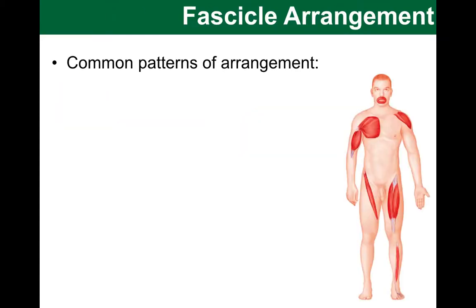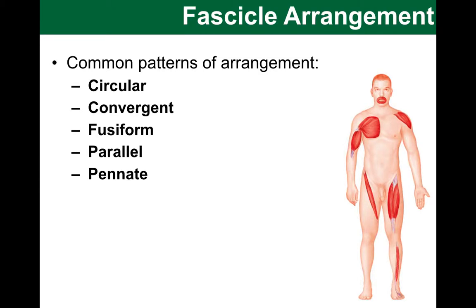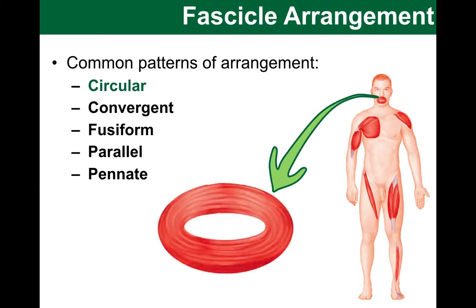There are five common patterns of arrangement that I want to discuss with you briefly. Let's start with the circular ones. The example I have picked here is the orbicularis oris muscle — the round muscle around the mouth. In circular muscles, the fibers are arranged in concentric circles.